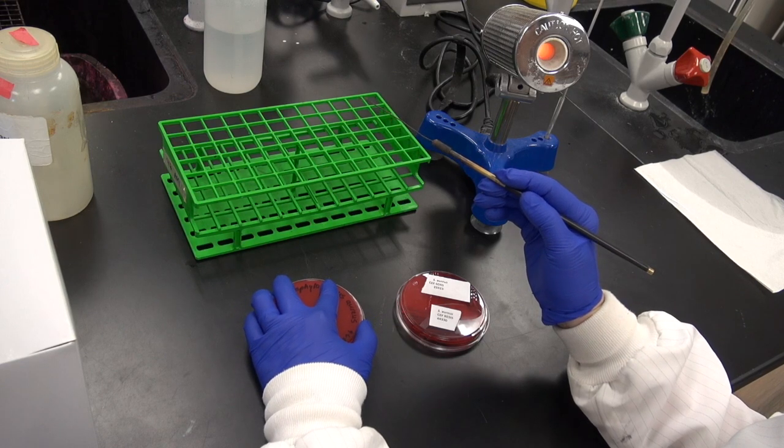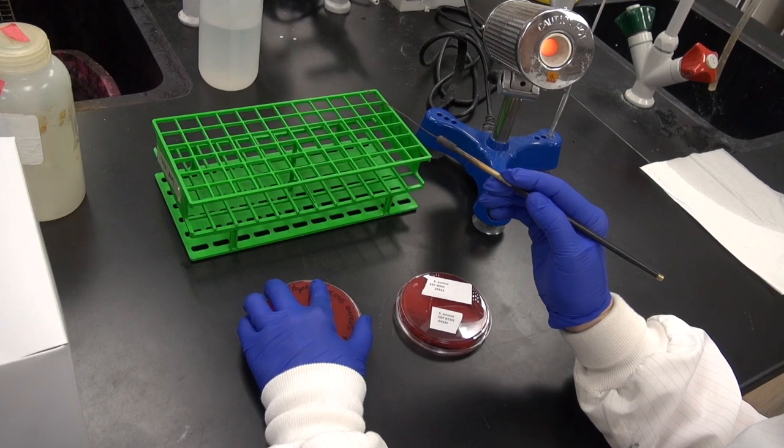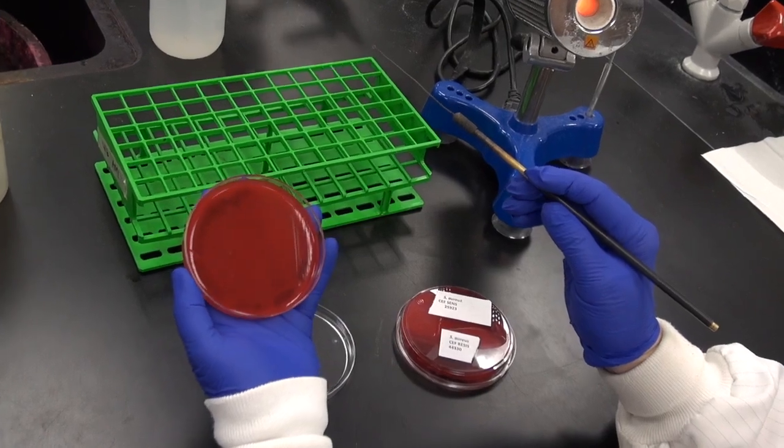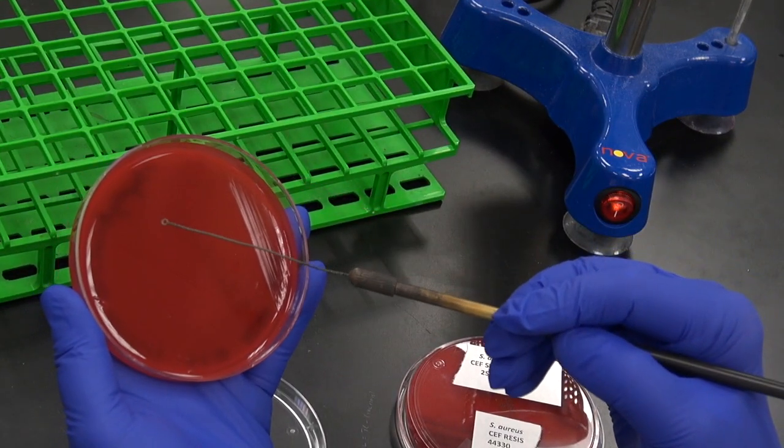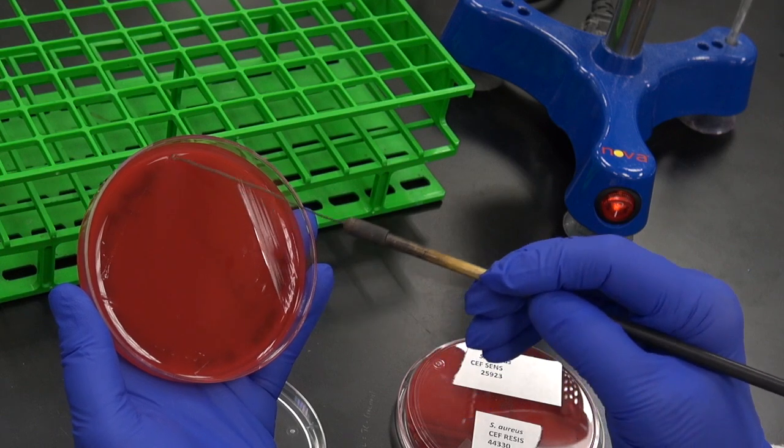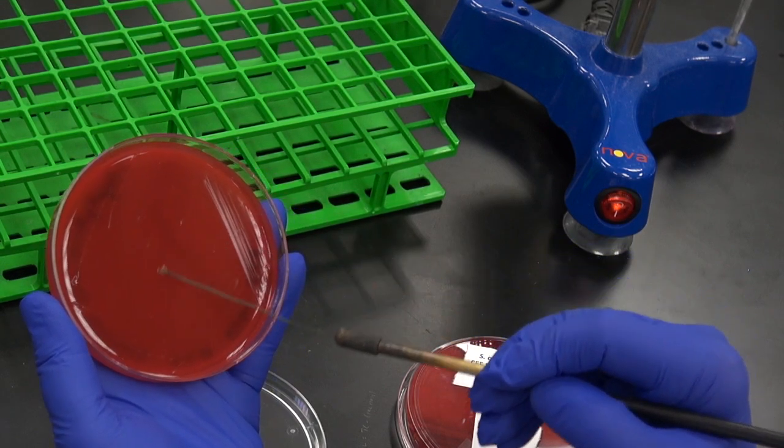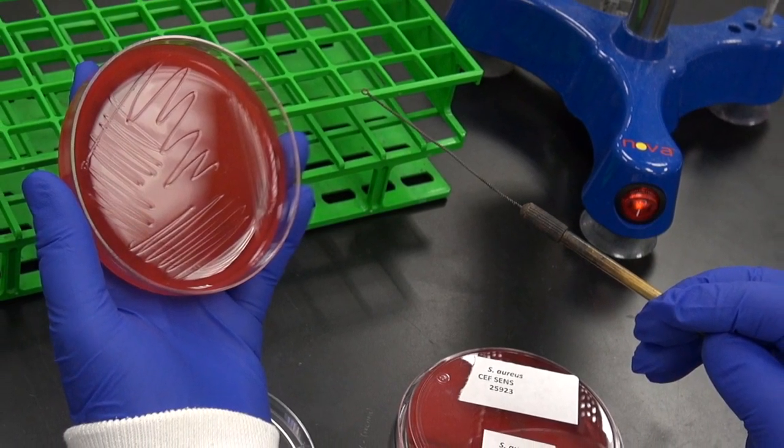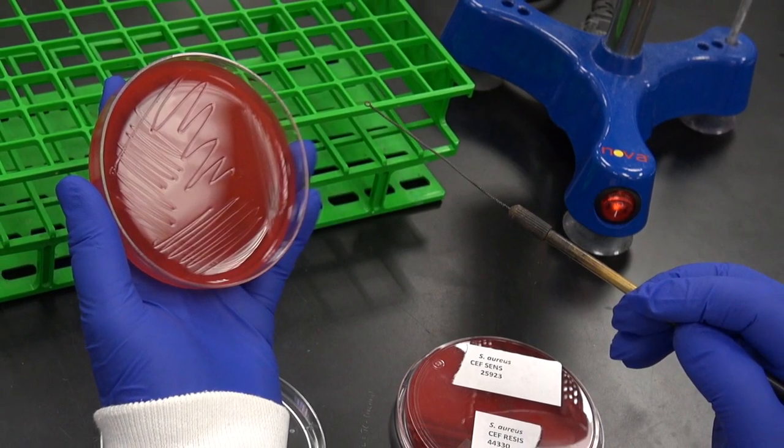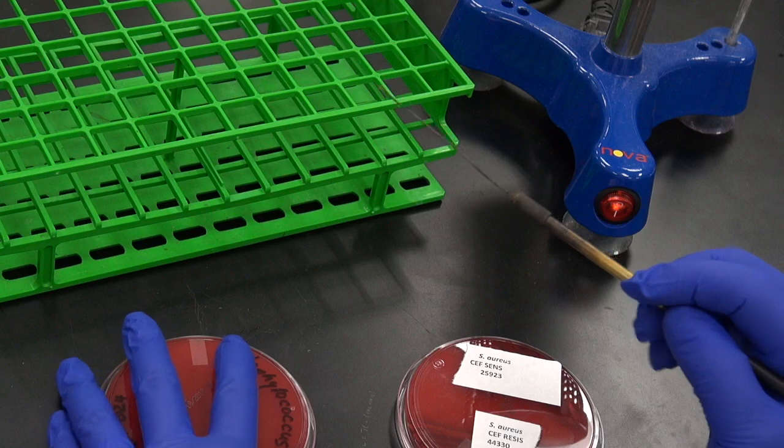Then open the plate and streak the fourth quadrant, using the same technique. Make sure not to cross into the primary quadrant at the end of the streak. Here you can see the streak pattern. Close your plate.